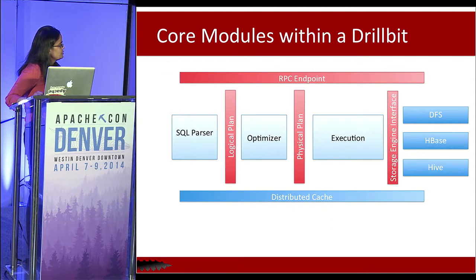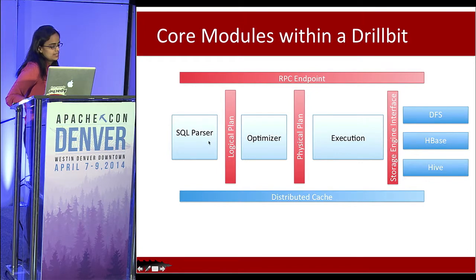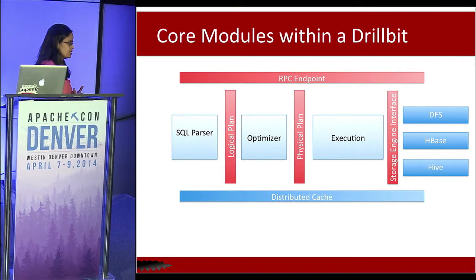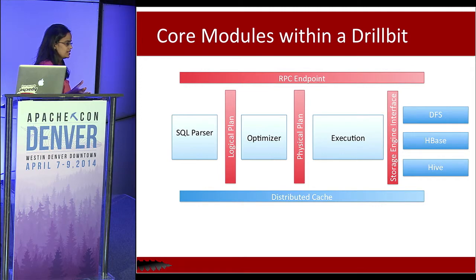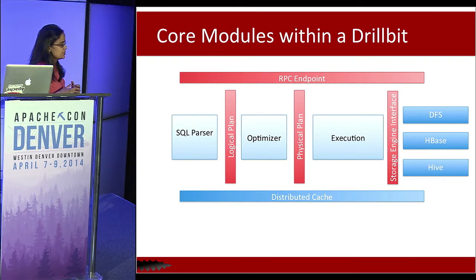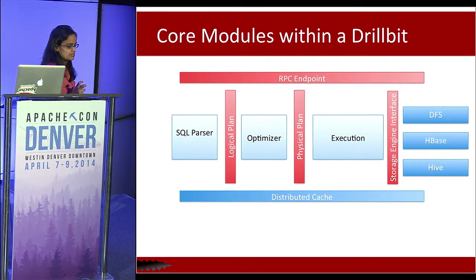The key modules within a DrillBit include an RPC endpoint to accept client queries, a SQL parser leveraging open-source Apache Calcite (Optiq) which generates a logical plan, an optimizer that creates a physical plan, and execution scheduled across cluster nodes. Storage engine interfaces are wrappers on top of data sources that provide metadata, readers, and writers so Drill can communicate with them. For example, the Hive storage engine can expose that a table is partitioned, allowing Drill to optimize accordingly. Storage engine interfaces also expose the optimization capabilities of the underlying data sources.